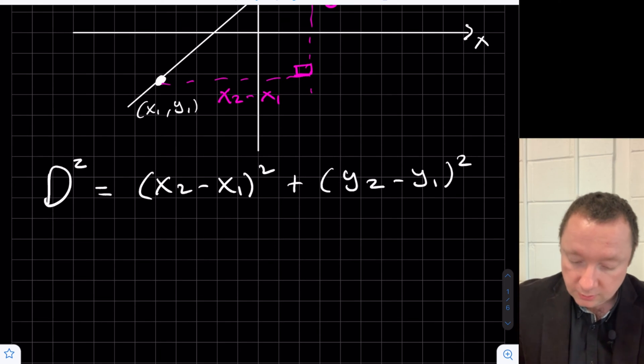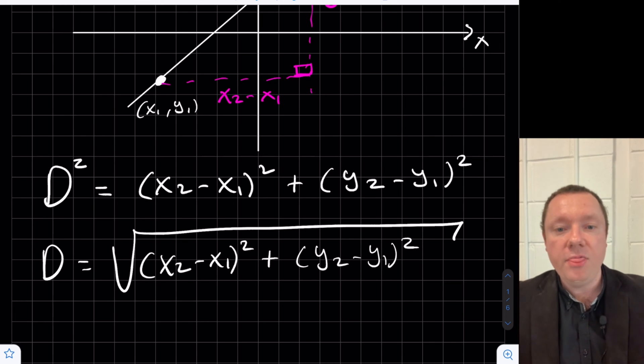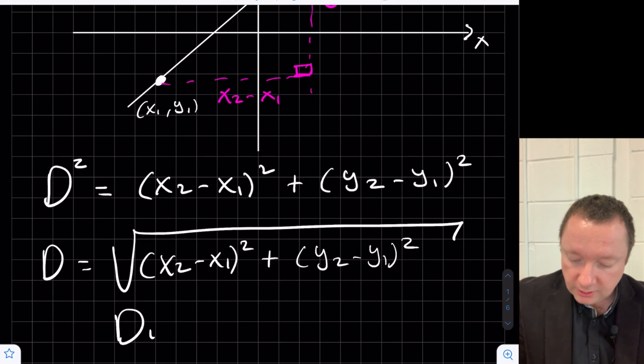Then the distance squared would be x2 minus x1 squared plus y2 minus y1 squared. Or in other words, distance itself would be the square root of all that, which is x2 minus x1 squared plus y2 minus y1 squared. And you can extend that to 3D by adding a z-axis as well. But this is your distance formula.